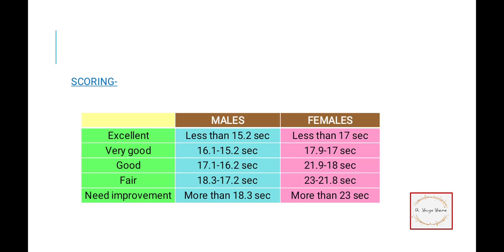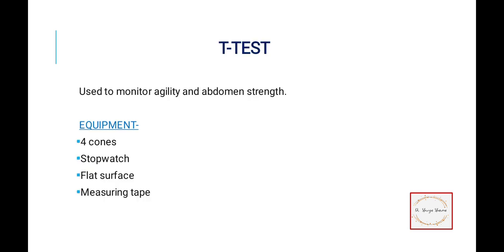Scoring is different for males and females. Excellent is less than 15.2 seconds in males and less than 17 seconds in females. Need improvement is more than 18.3 seconds in males and more than 23 seconds in females.